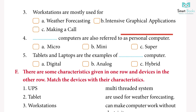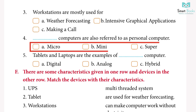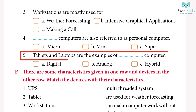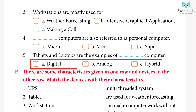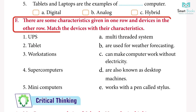4. ___ computers are also referred to as personal computers. a) Micro, b) Mini, c) Super. Answer: a) Micro. 5. Tablets and laptops are examples of ___ computers. a) Digital, b) Analog, c) Hybrid. Answer: a) Digital.